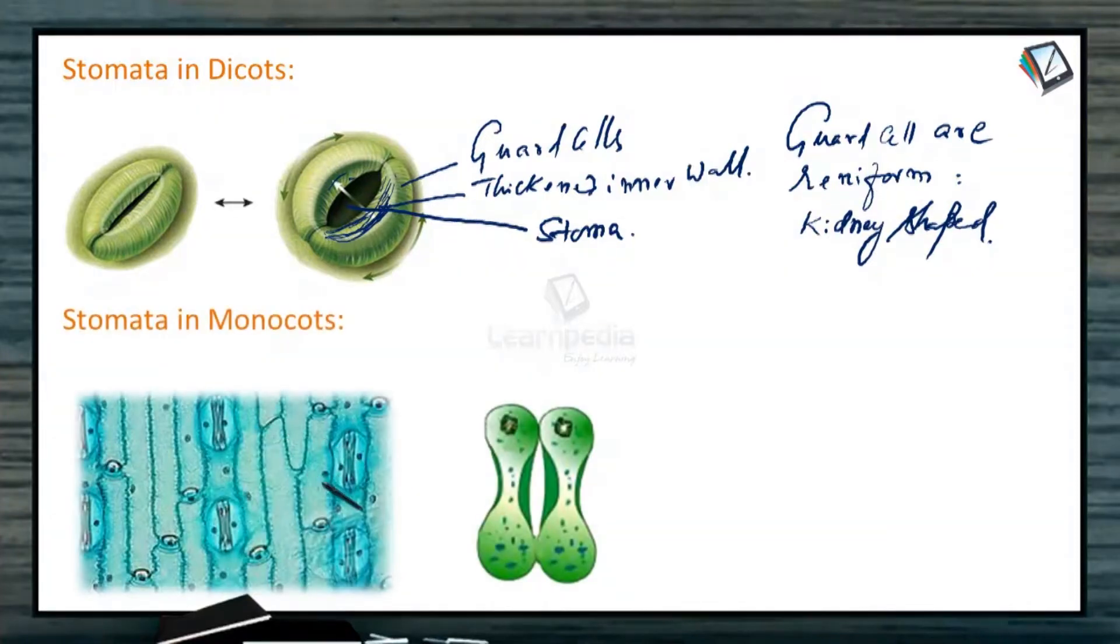Look at the monocots. This is the epidermis. And in this epidermis, these are the stomata. Here, the guard cells are dumbbell shaped. In this dumbbell shape, the guard cells have two ends, which are made up of thin walls. This is a thin walled portion.